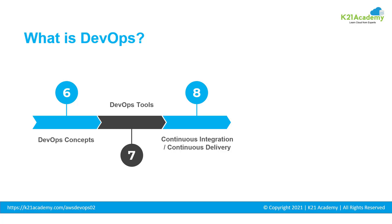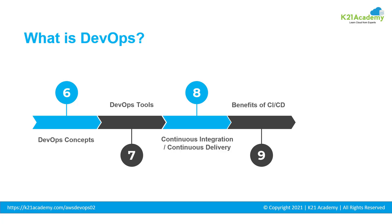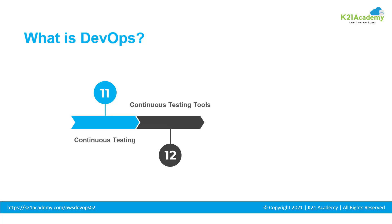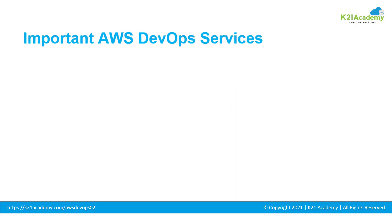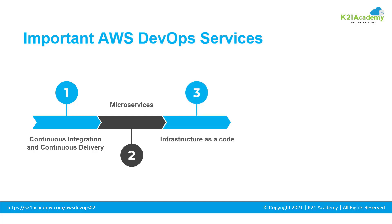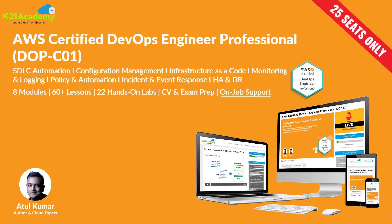We will then go through various DevOps concepts and tools, continuous integration and continuous delivery — where your development team involves frequent code changes pushed to the main branch while ensuring it does not impact changes made by developers working in parallel — and the benefits of CI/CD. We will also cover a Facebook use case, continuous testing, continuous testing tools, continuous deployment and continuous monitoring, and finally the important AWS DevOps services.